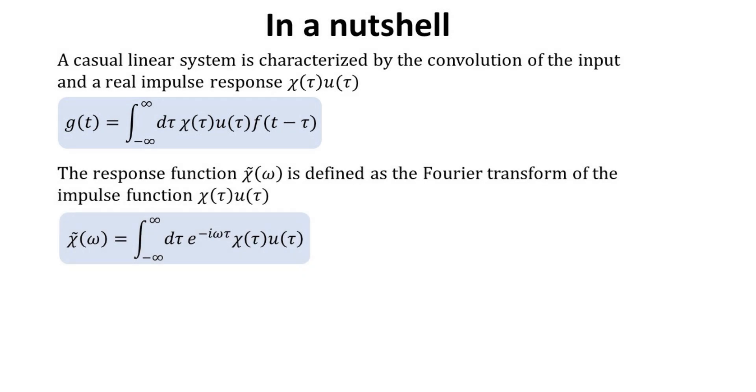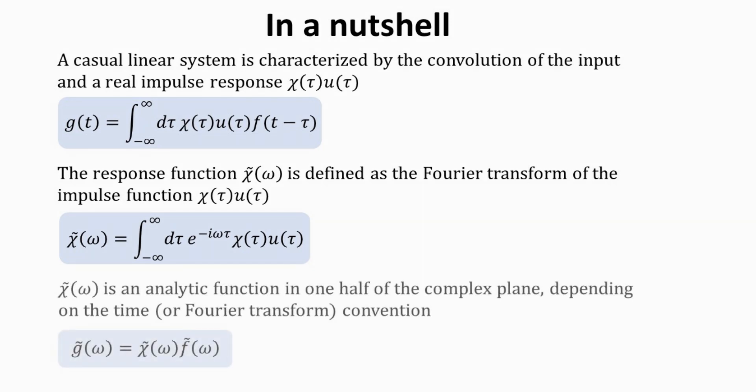Next, we derive the generalized response function. We also take this chance to clarify the different conventions for Fourier transformation. We prove this elegant relation, that the output is given by the product of the generalized response function with the input. Finally, we prove that the generalized response function is analytic over one-half of the complex frequency plane.